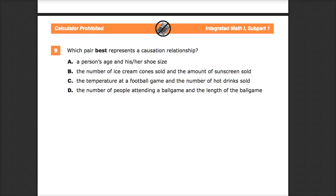This is the Integrative Math 1 Practice Test for TinReady. Question number 9 of the 2017-18 edition. Which pair best represents a causation relationship?